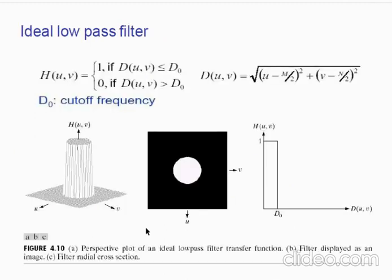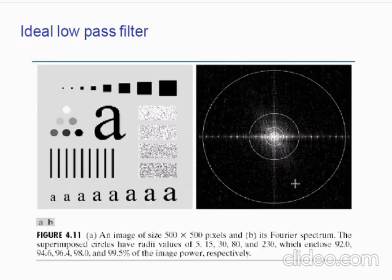An ideal low pass filter gives you a value of one whenever your intensity is less than a certain threshold, and it gives you zero whenever you are above that threshold. Here, d₀ is defining the threshold — before it, the impulse response of the filter is one, and after that threshold the impulse response is zero.